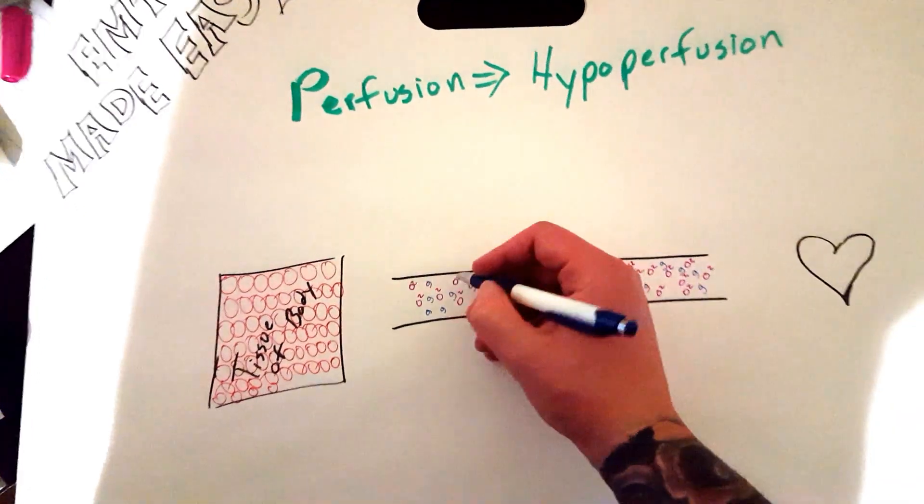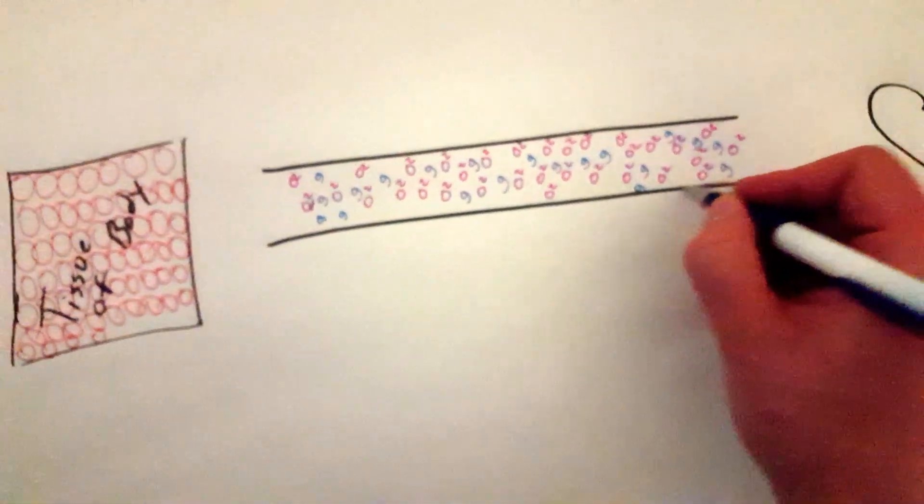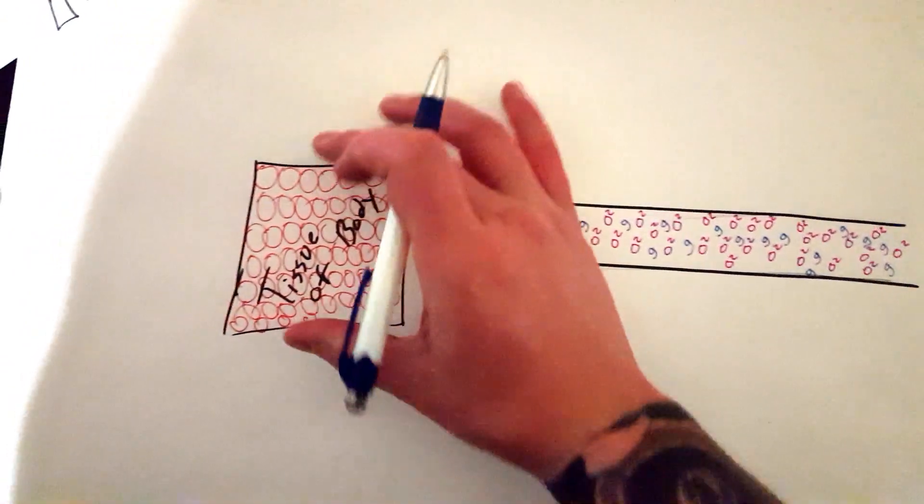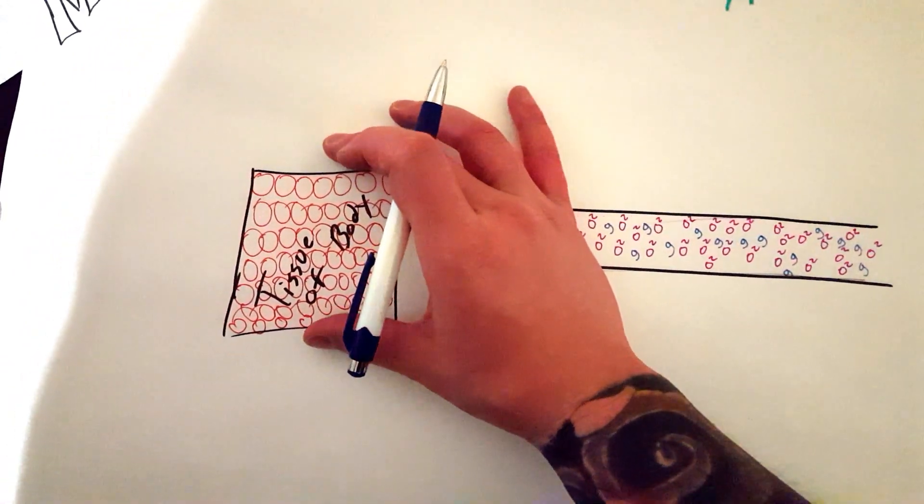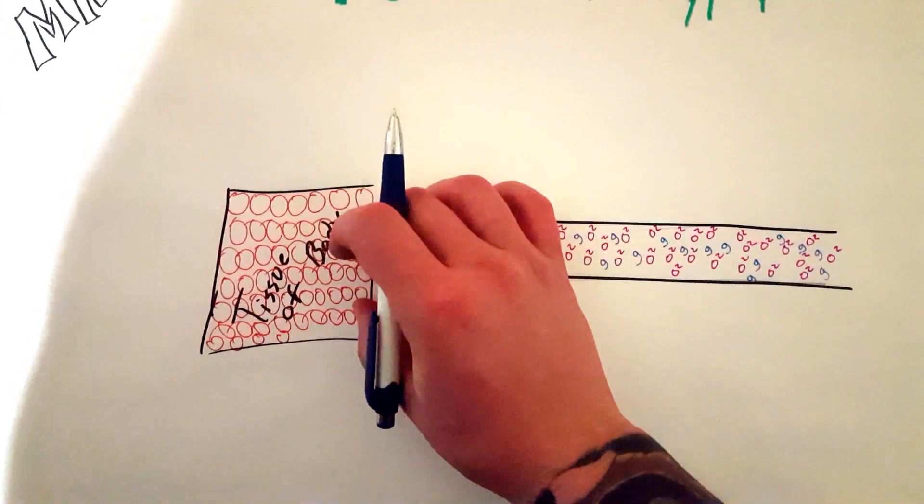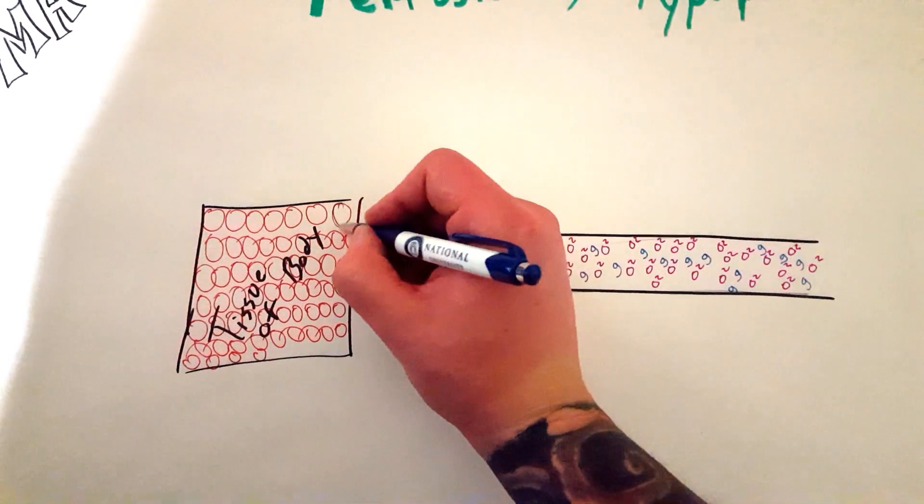You see these represent O2, obviously oxygen. This is a vessel, so this represents every single vessel in your body. This is a piece of tissue, so tissue can be skin, liver, lungs, everything in your body - it's all made out of tissues, right? Then the little red circles are the cells that make the tissue.